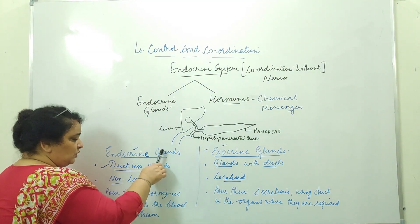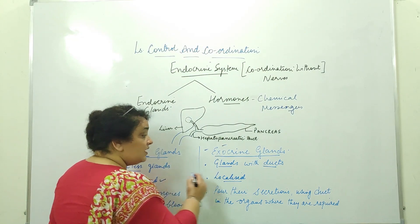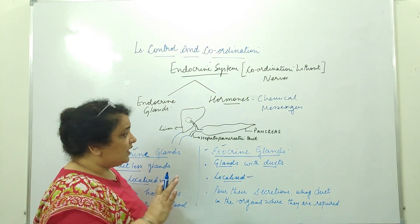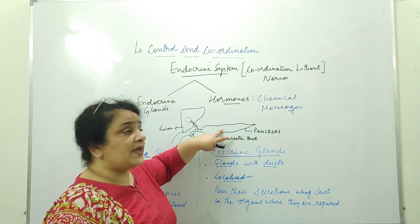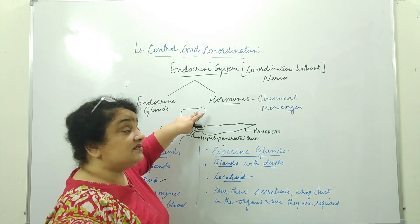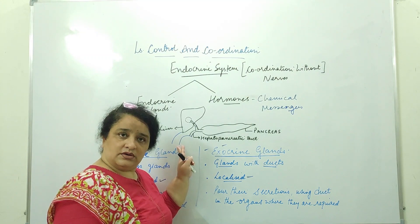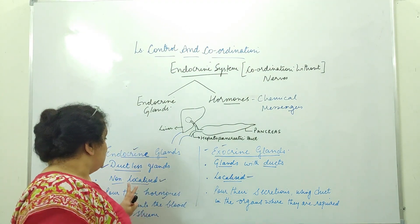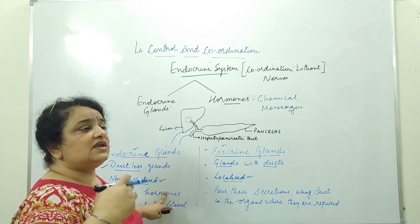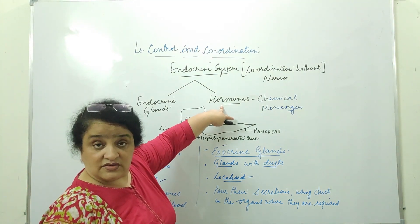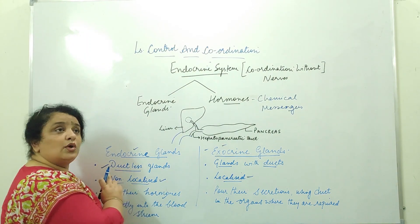Second point is these endocrine glands are non-localized and these exocrine glands are localized. This is also the keyword. What does it mean, localized and non-localized? Localized means these glands are present or located where their secretions are required. For example this pancreas, its pancreatic juice, and liver, its bile juice, is required in the duodenum that is a part of the small intestine. So they are present just near this organ. But endocrine glands are non-localized. It is not necessary that where their secretions are required, they are present there. They pour their secretions and hormones directly into the bloodstream. They don't need any ducts. So they are non-localized.